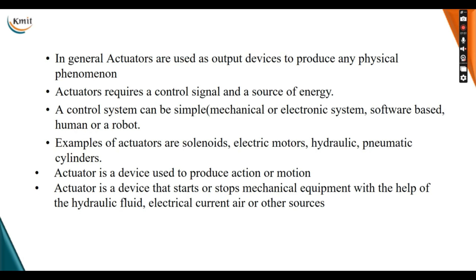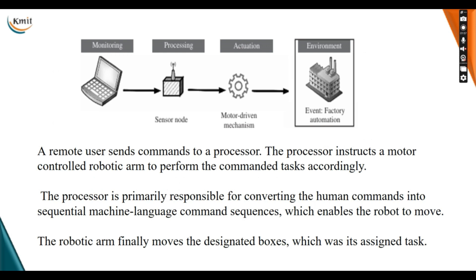Examples of actuators are solenoids, electric motors, hydraulic cylinders, and pneumatic cylinders. To illustrate with a diagram — if you consider a robot moving its arm — a remote user sends commands to the processor. The processor instructs a motor controller and robotic arm to perform the commanded task. The processor is primarily responsible for converting human commands into a sequential machine language command sequence which enables the robot to move, and the robotic arm finally moves the designated boxes.